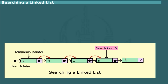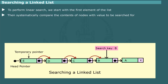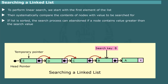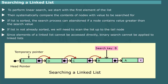Searching a linked list. We can perform a linear search on a linked list. In this operation, we start with the first element and systematically compare the contents of nodes with the value to be searched for. The operation terminates when a match is found. If the list is already sorted, the search can be abandoned after a node value is found to be greater than the search value. If the list is not sorted, we would need to scan up to the tail node. Unlike an array, the elements of a linked list cannot be accessed directly. Thus, an efficient search method called binary search, which uses a middle element, cannot be applied to a list, as there is no simple way of finding the middle element.